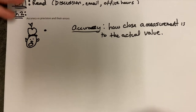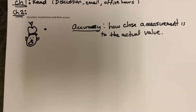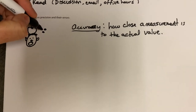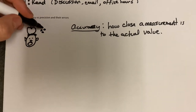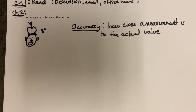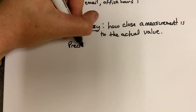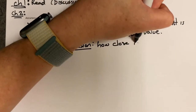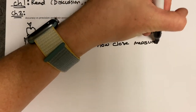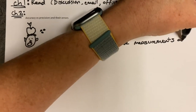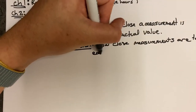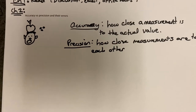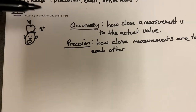Precision: you need more than one data point to tell you whether or not something is precise. So if I shoot again and I shoot over here, and then one more time and I get right here, all three of those ended up in the same general area — that's precision. Precision is how close measurements are to each other. If they're really close, they're highly precise.